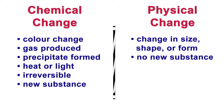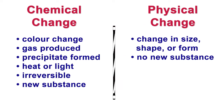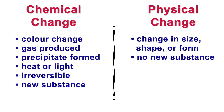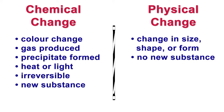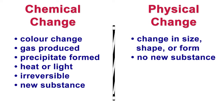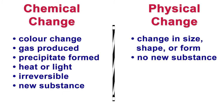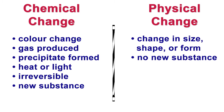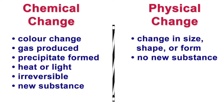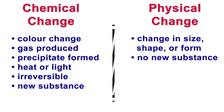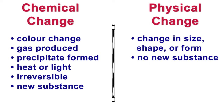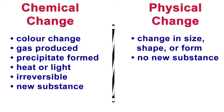With chemical change there are bits of evidence that you can look for. For instance, there may be a color change, gas produced, a precipitate formed, heat or light given off, the change may be irreversible, and a new substance may be formed.